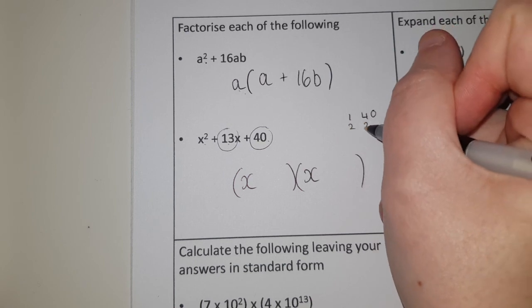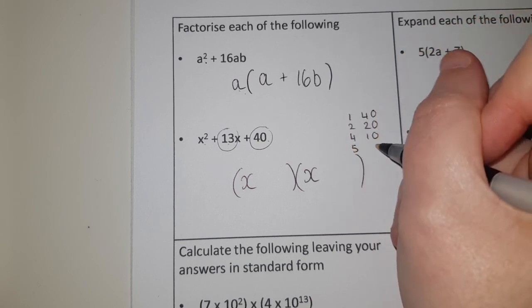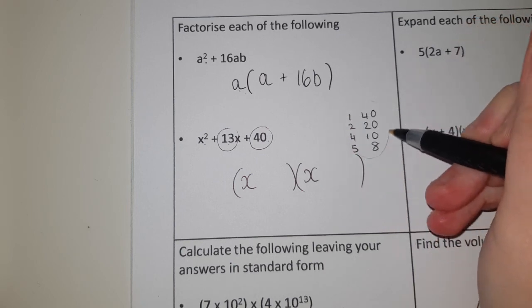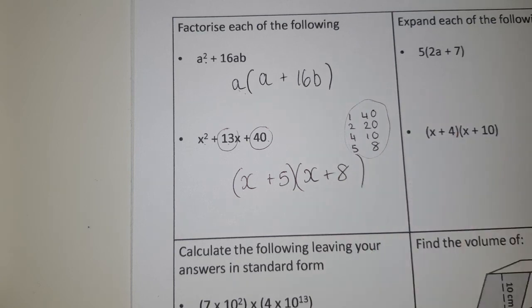So I've got 1 times 40, 2 times 20, 3's don't go in, 4 times 10, 5 times 8. There's all my pairs that multiply to give 40, the one that adds to 13 is 5 and 8.